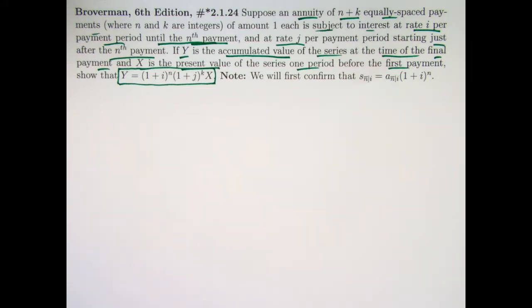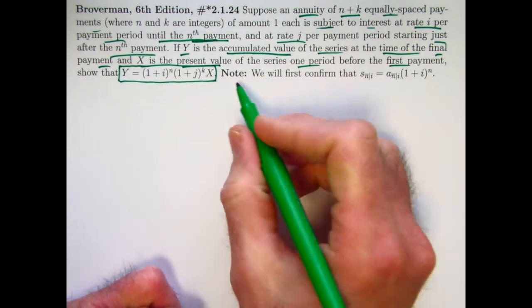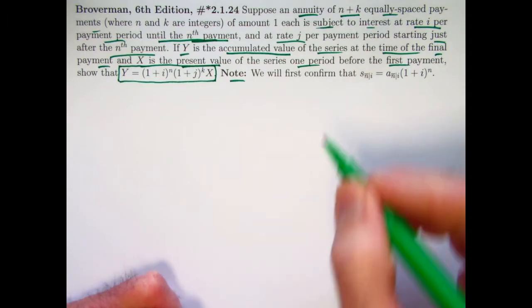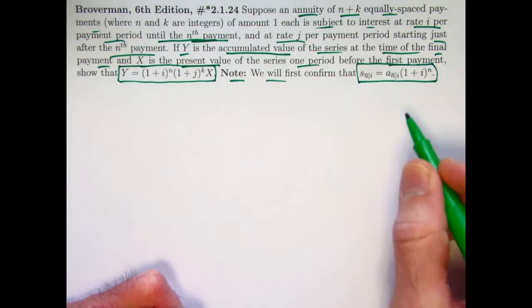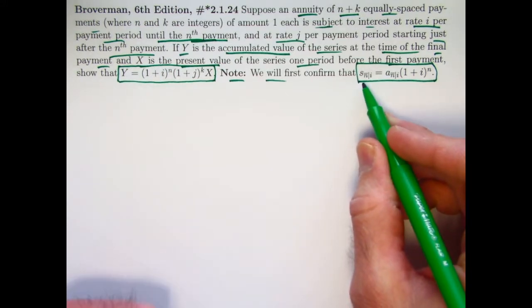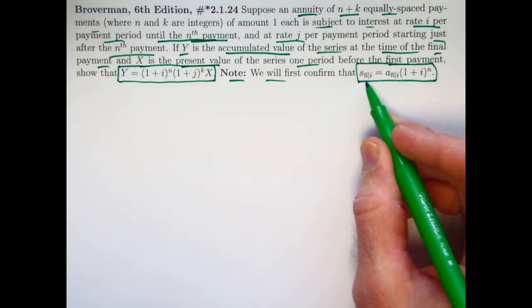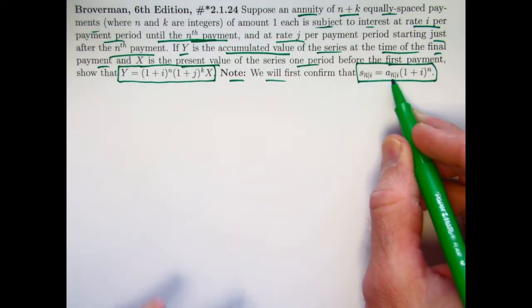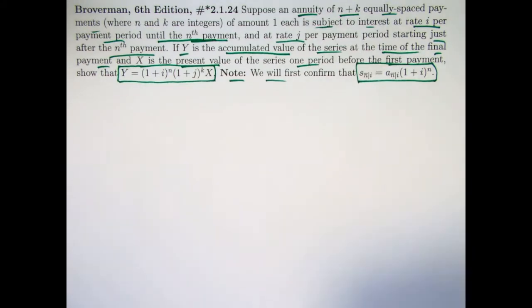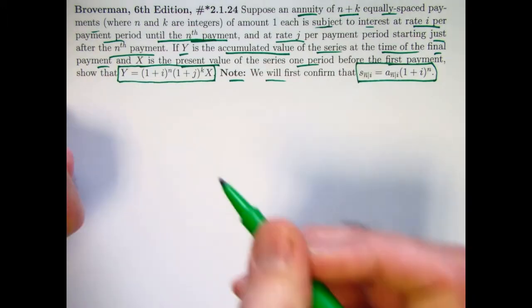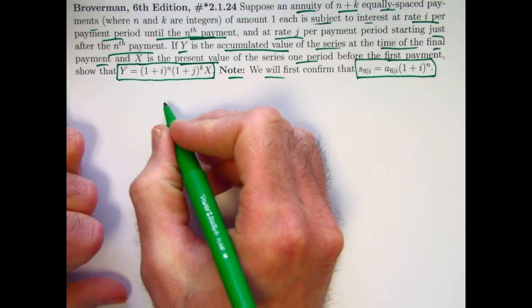We want to confirm this algebraically. Note this is not required in the book's problem. We will first confirm that the future value of a series of payments of 1 for an annuity immediate immediately after the last payment is the present value at time zero pushed forward in time by n years, and this would be true even if I replaced the i with j.